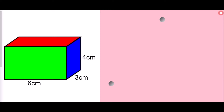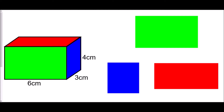What we've got here is a cuboid, and I've color-coded the different faces. A cuboid is made up entirely of rectangles. We have the green shape at the front, the blue shape at the side, and the red shape at the top. I'm going to start by finding the area of each of those shapes.